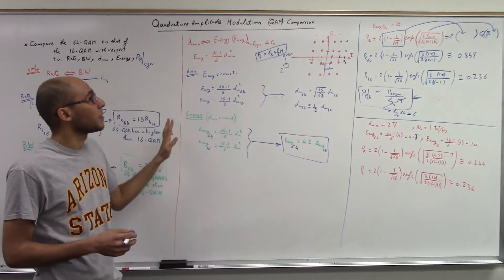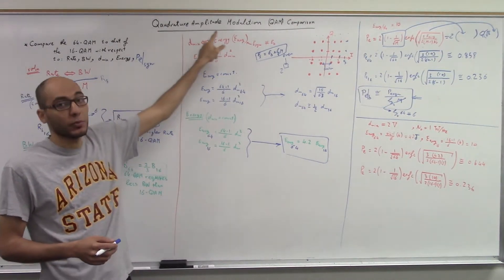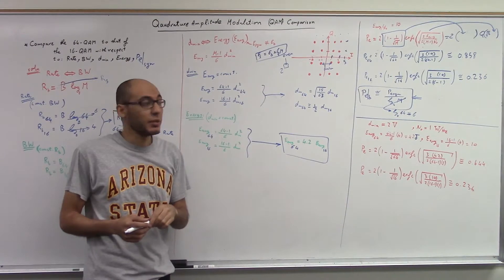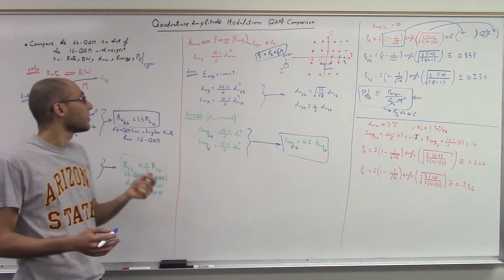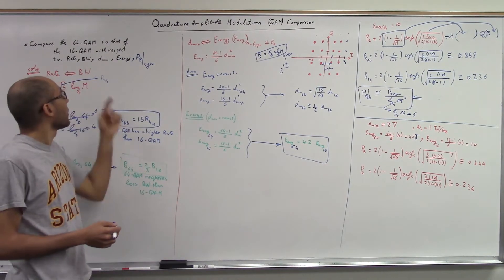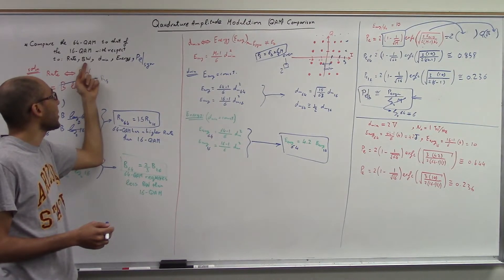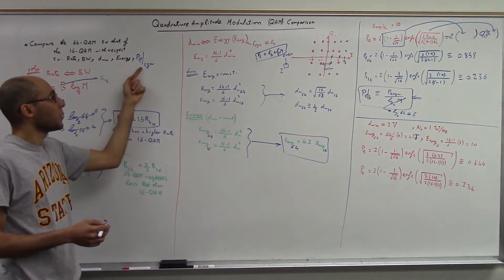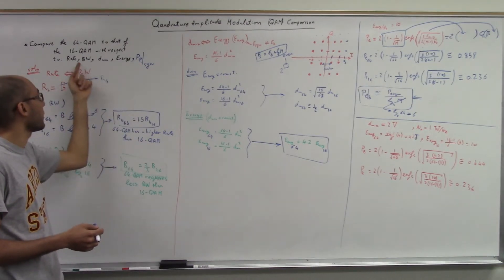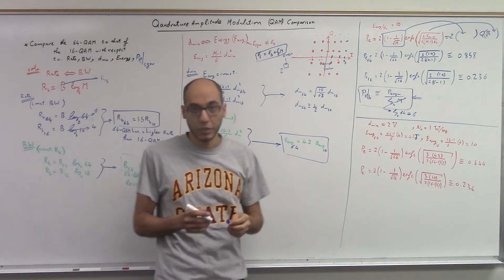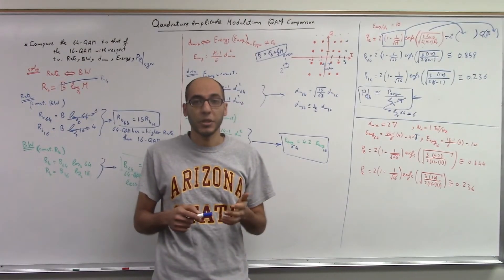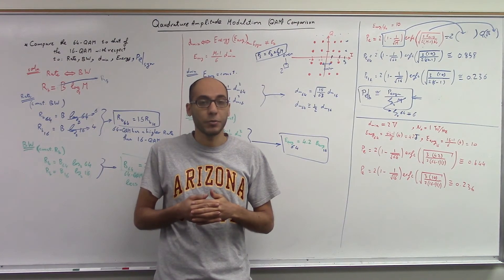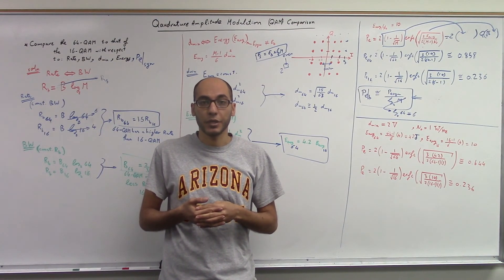The key takeaway is that whenever comparing QAM schemes, you must fix something. Rate affects bandwidth and bandwidth affects rate. D minimum, energy, and probability of symbol error all affect each other, but they do not affect bandwidth or rate. If you found this video useful, share it with others, and don't forget to ask any questions you have.